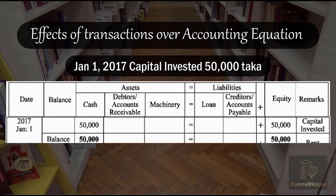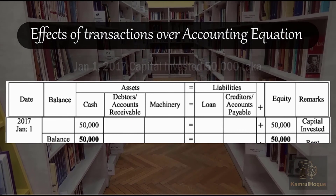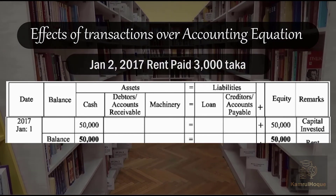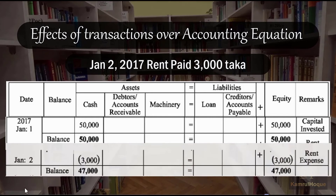This is the example of January 2, 2017 — rent paid 3,000. Previously the cash was 50,000. We pay 3,000 in rent, so the cash reduces by 3,000. The rent is an expense, so equity also reduces by 3,000. The balance is maintained on both sides.